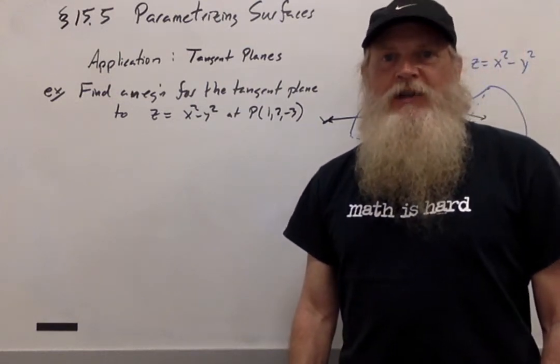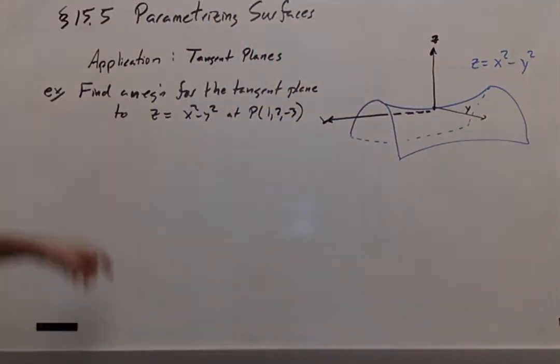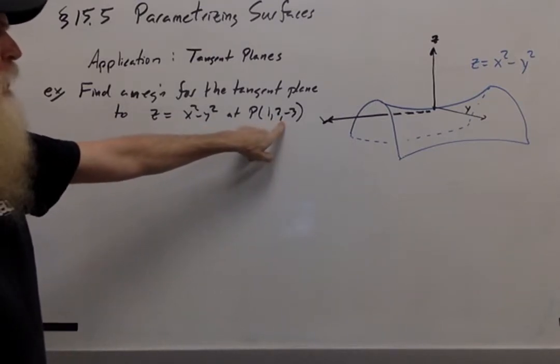Let me show you an application of parametrization. What I'd like us to do is find an equation for the tangent plane to the surface z equals x squared minus y squared at the point (1, 2, -3).